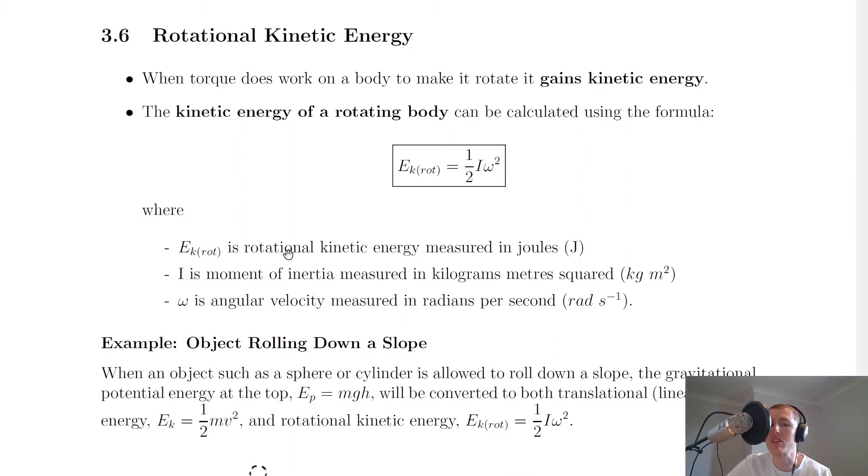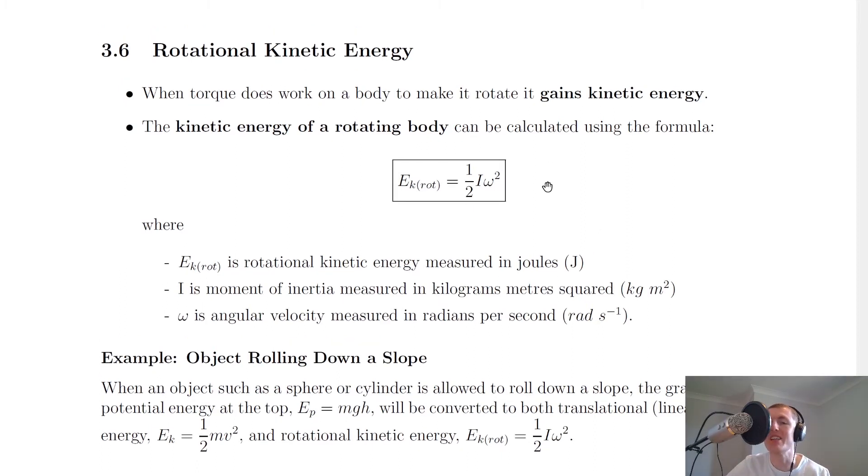So EK_rot is rotational kinetic energy measured in joules. I is moment of inertia measured in kilograms meters squared. And omega is angular velocity measured in radians per second. So this equation is on the relationship sheet in the exam.